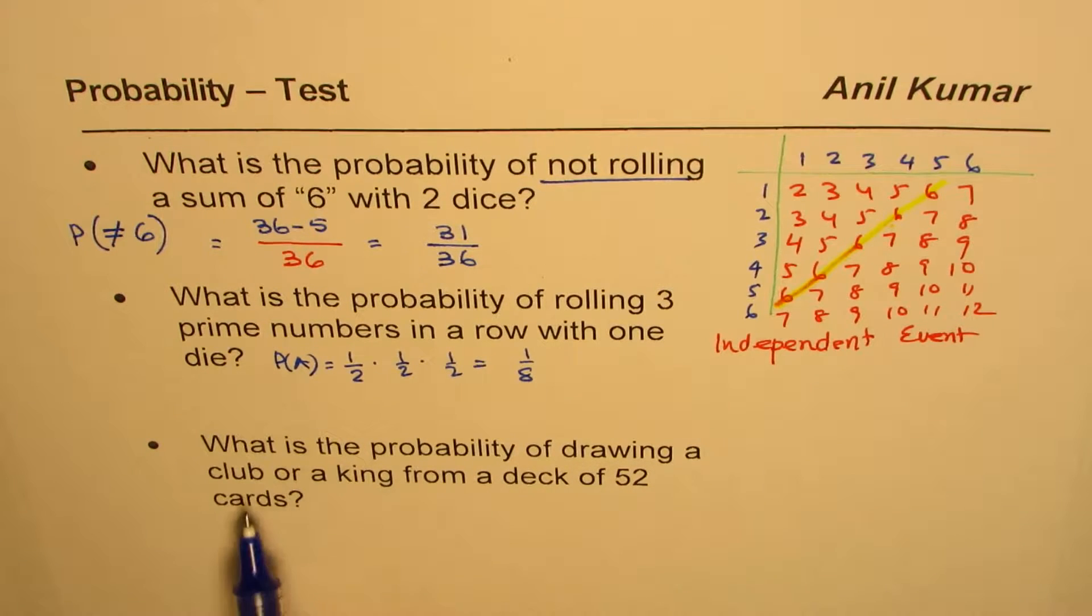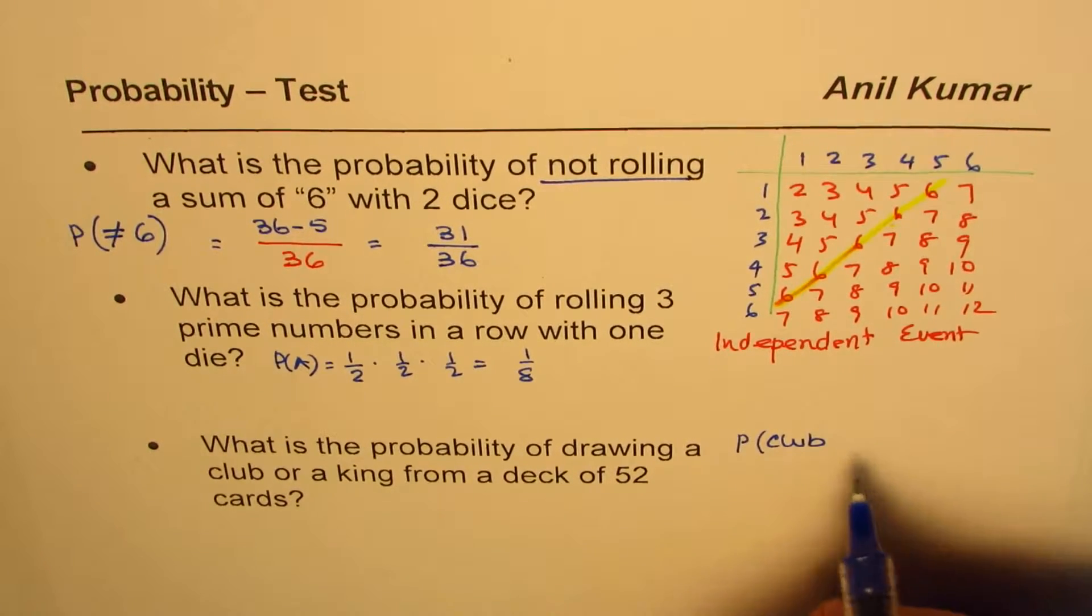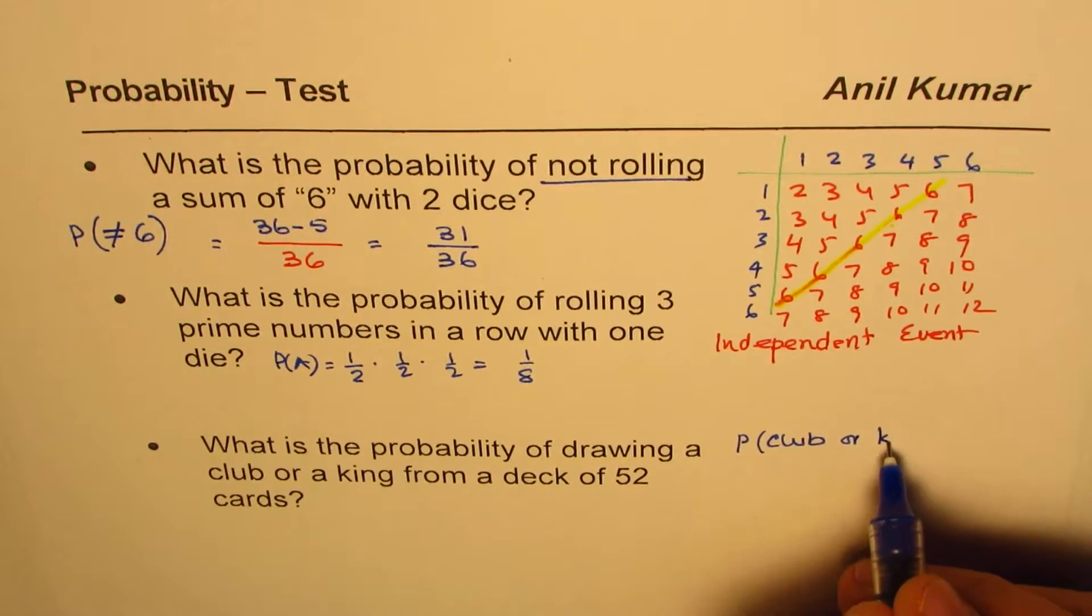Let me write just event A. What is the probability of drawing a club or a king from a deck of 52 cards? So probability of a club or, or or means addition, or king.